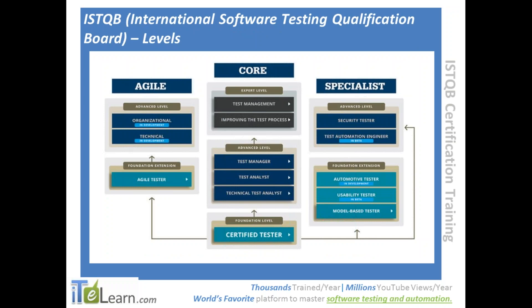What are the different levels of certifications and which level should you target? This picture is taken from the ISTQB website. The bottom level is Certified Tester Foundation Level - that's what this training is all for, also called CTFL. The foundational level is what you're actually targeting. It hasn't changed much over time, whereas the agile and specialization tracks on the sides go through more changes.